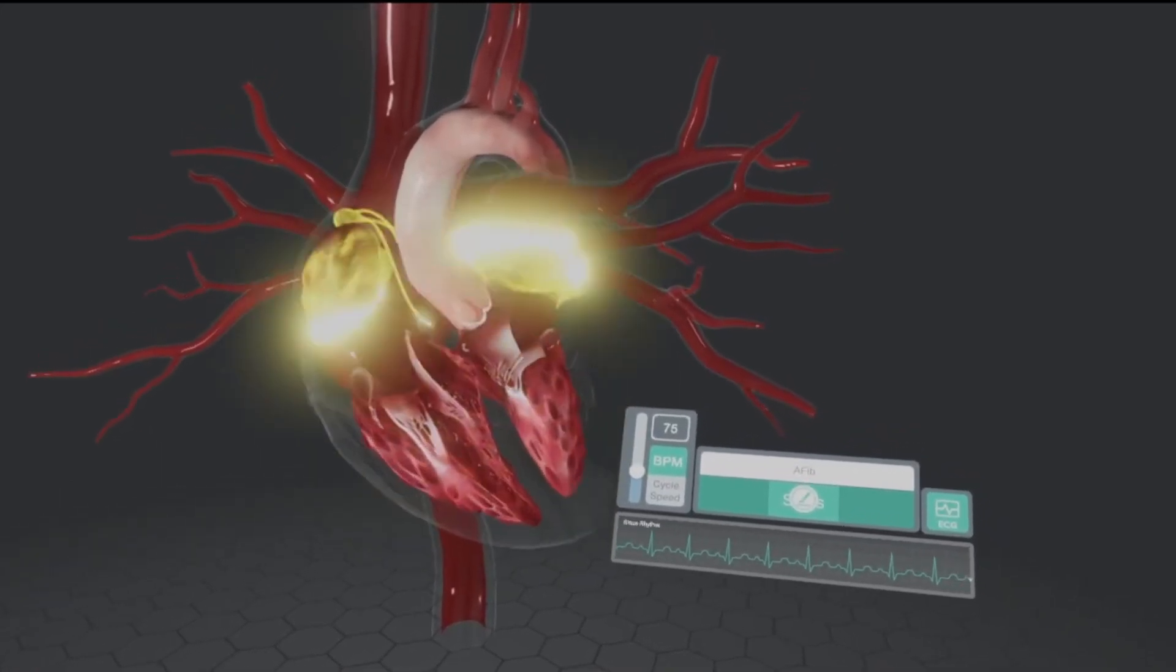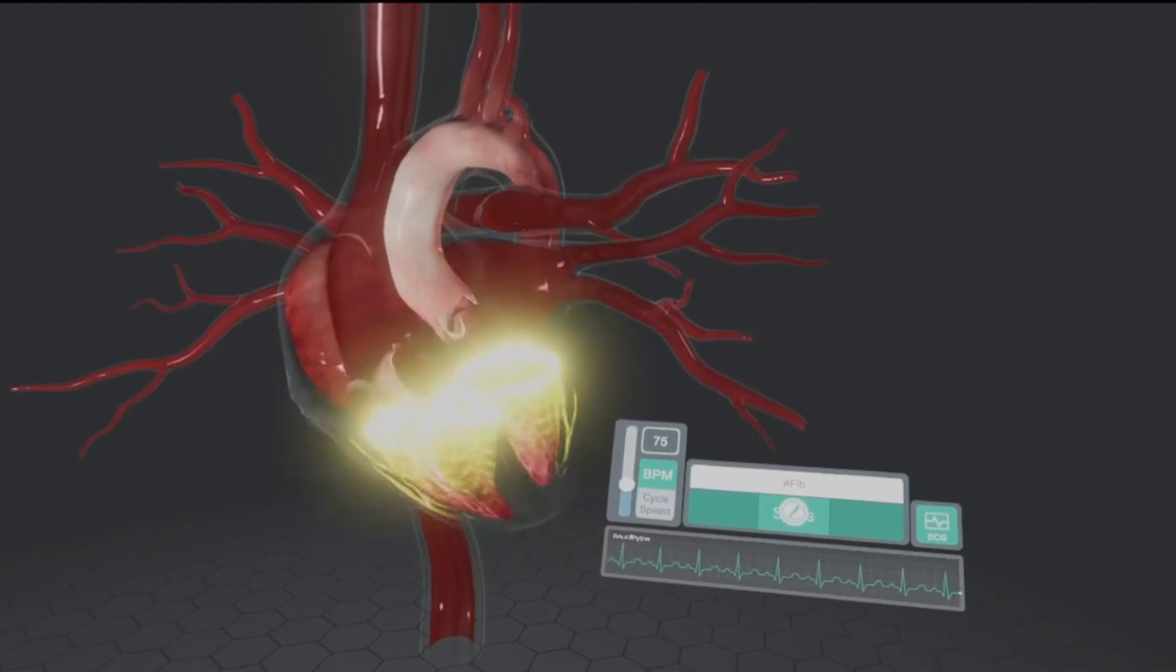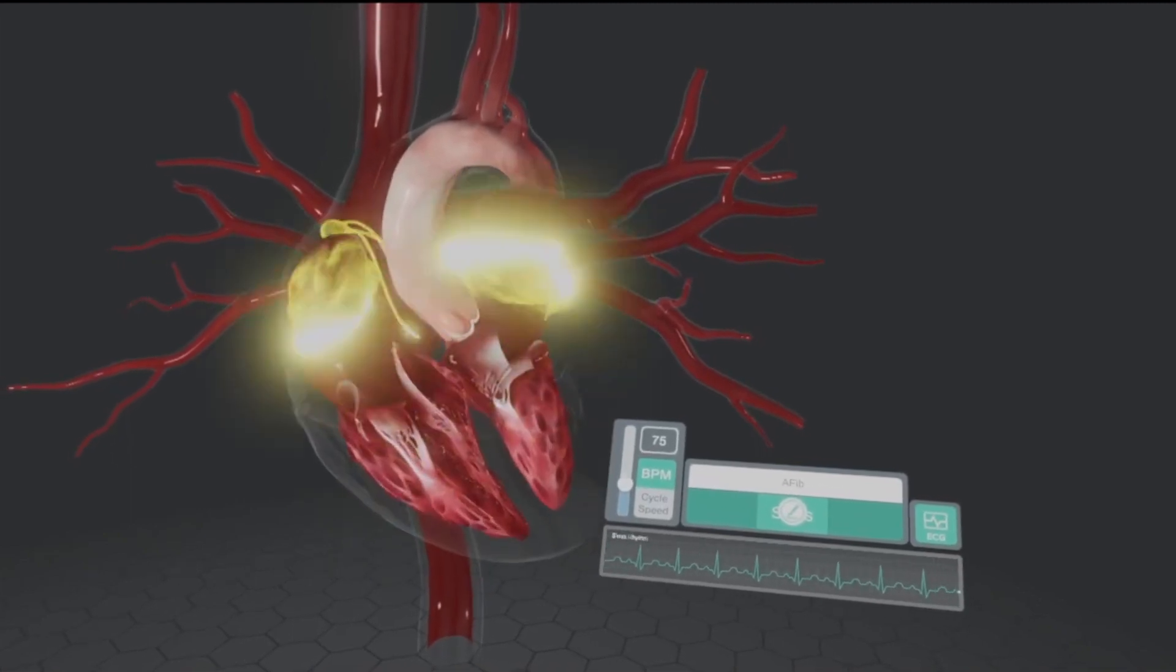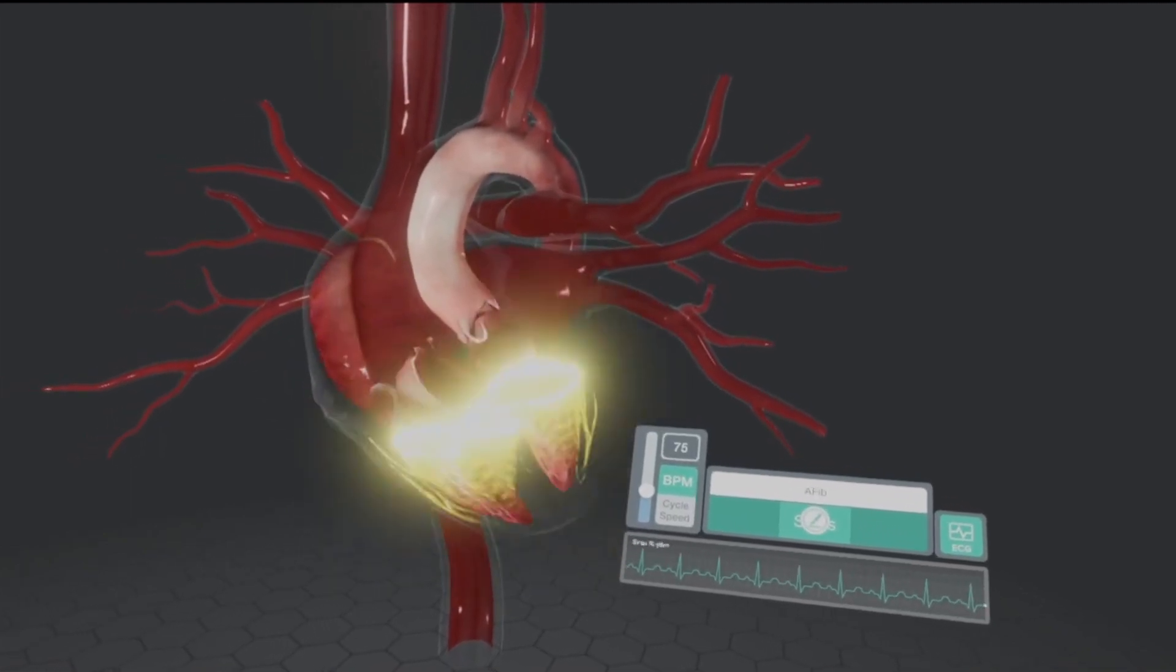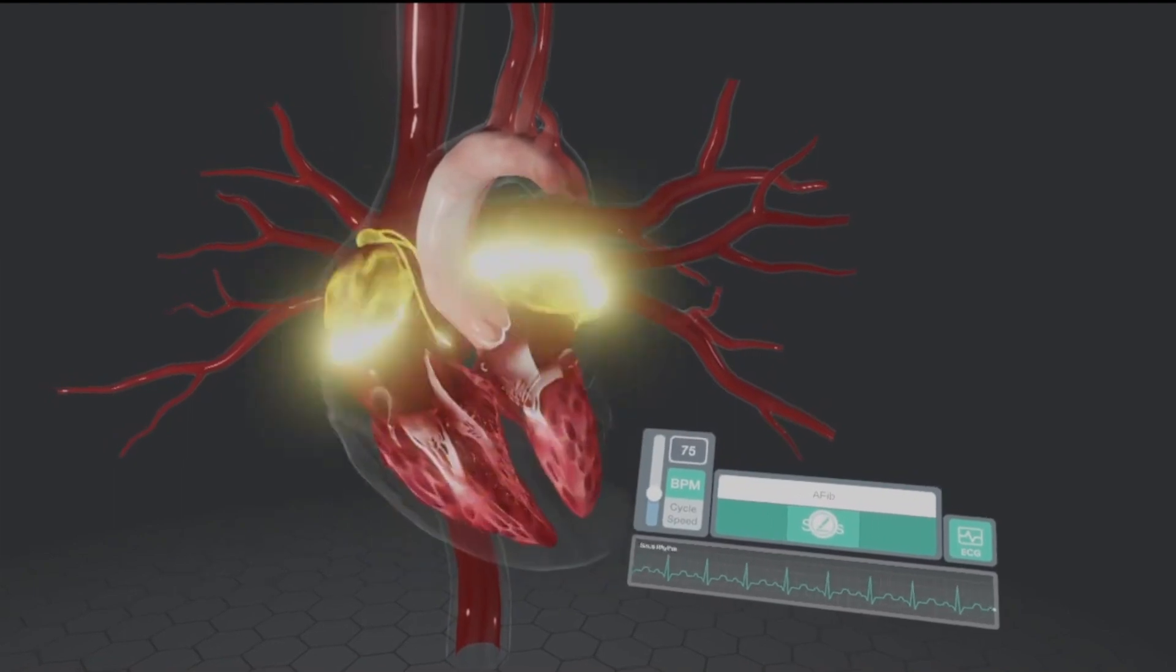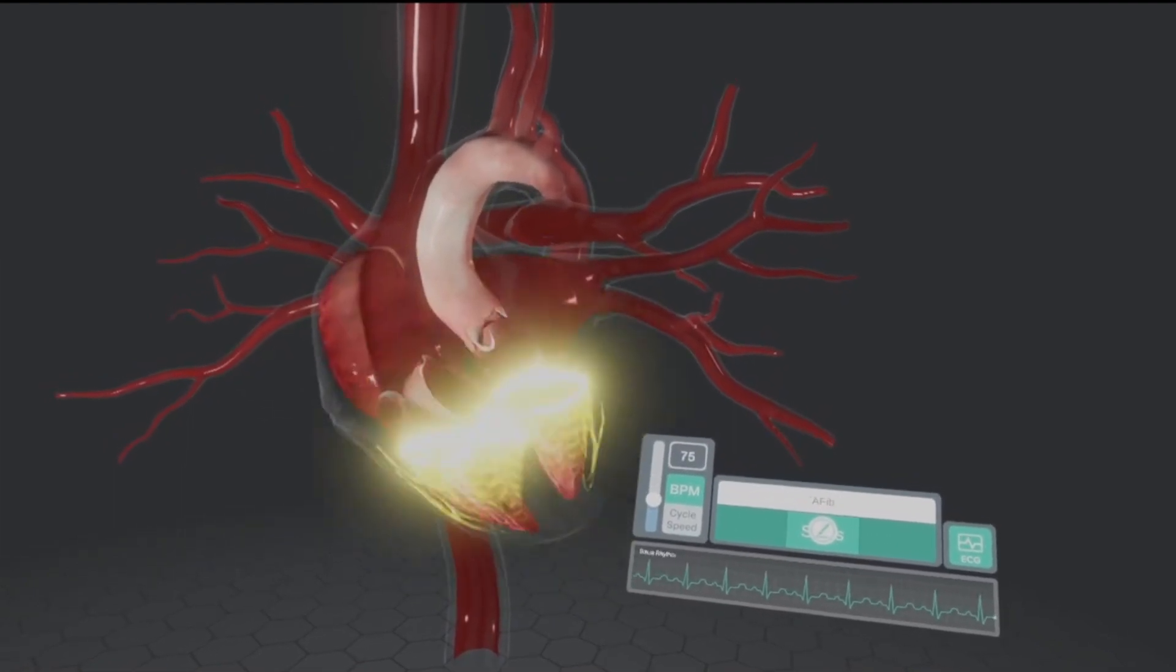So here's an example of sinus rhythm. Sinus rhythm at 75 beats per minute. We're showing the inside of the heart, which shows the atrial kick and the ventricular contraction as well.